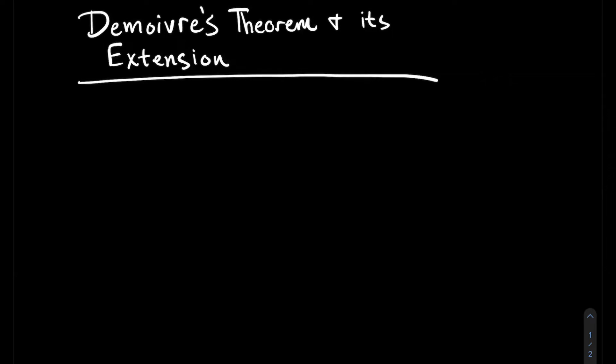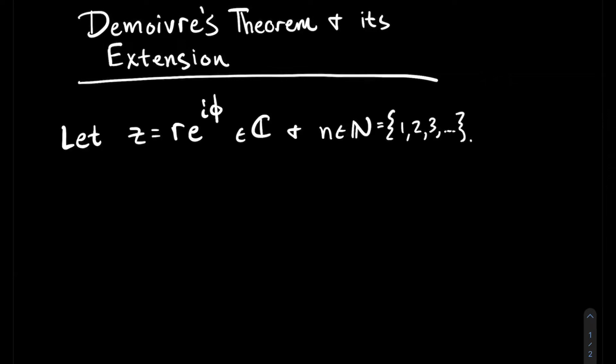This is a short video about De Moivre's Theorem and its extension. Here's the setup: say you've got a complex number z and you've written it in polar coordinates as r times e to the i phi. And let's take n, for right now, just to be a natural number.